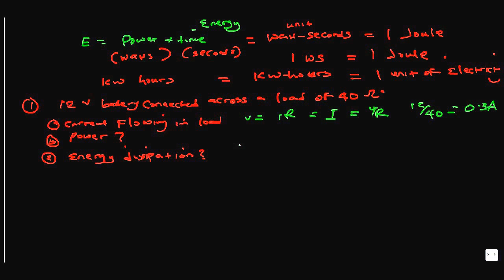For power, P = V×I. The voltage is 12 volts and the current is 0.3 amps, so power equals 12 times 0.3 — that gives us 3.6 watts.